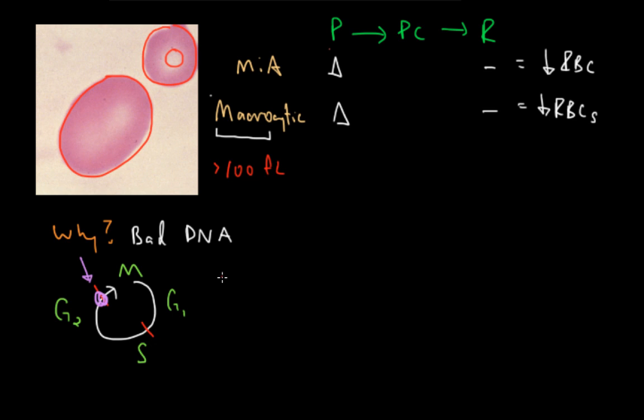Now, if the DNA hasn't been copied correctly, the cell is going to keep growing and growing in its G2 phase until all of its DNA has been copied and the cell is ready to proceed from G2 into M.